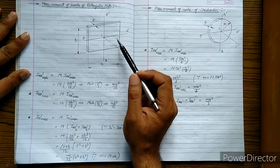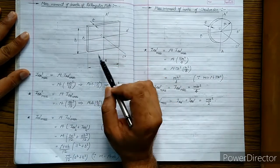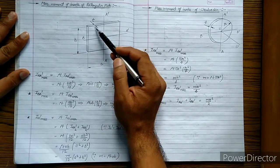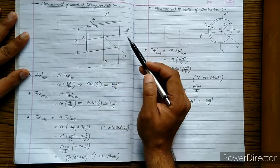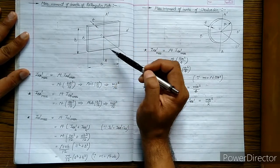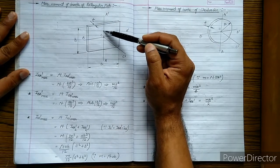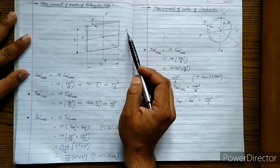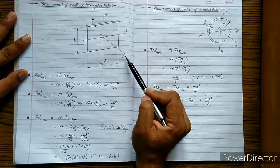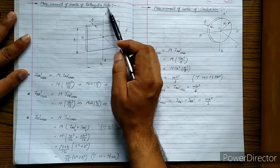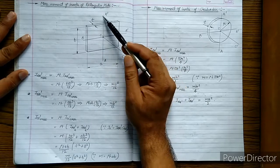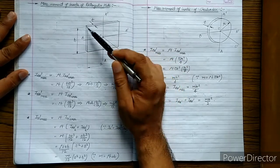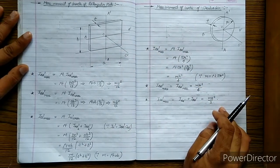This rectangular plate has its length labeled as 'a', its width labeled as 'b', and its thickness as 't'. From its center, three axes are drawn: a vertical axis labeled AA', a horizontal axis labeled BB', and a third axis CC' which is perpendicular to the plane of the plate. The first two axes AA' and BB' lie in the plane of the rectangular plate, while the third axis is perpendicular to it.